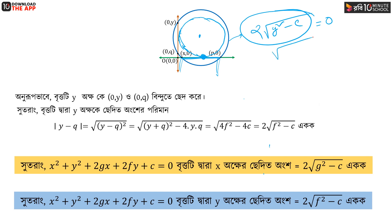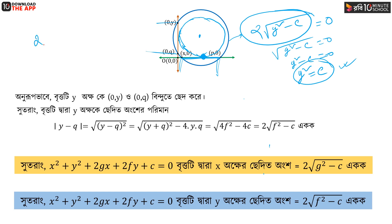For the circle to touch the x-axis, g squared minus c must equal 0, so g squared equals c. Similarly, for the circle to touch the y-axis, the condition gives y plus 2 terms that reduce to 0, meaning f squared minus c equals 0.